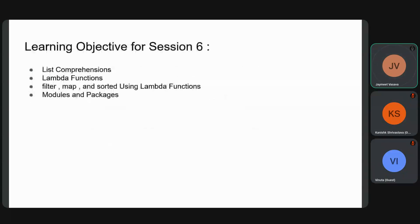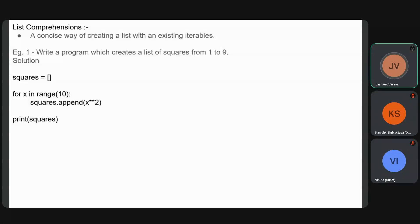In session six, the learning objectives include getting familiar with list comprehensions, lambda functions, using the filter, map, and sorted functions with lambda functions as arguments, and also learning about modules and packages. Starting with list comprehensions — a concise way of creating a list from an existing iterable.